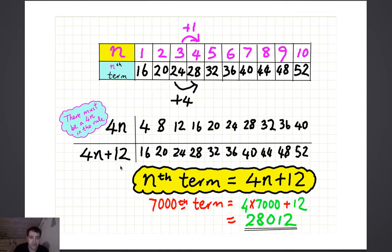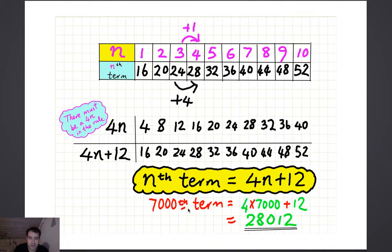So the rule is actually 4n plus 12. If we work out 4n plus 12: 4 times 1 plus 12 is 16, 4 times 2 plus 12 is 20, 4 times 3 plus 12 is 24, and so on — we get the numbers we were looking for. So the nth term is 4n plus 12. We can now work out the 7,000th term: 4 times 7,000 plus 12, which is 28,012. We didn't need to work out the previous 6,999 terms to do that.